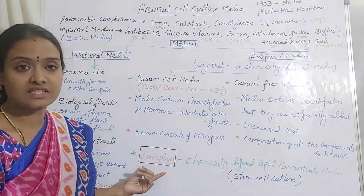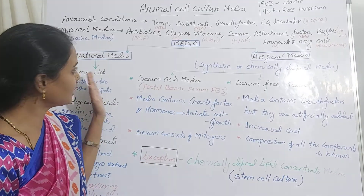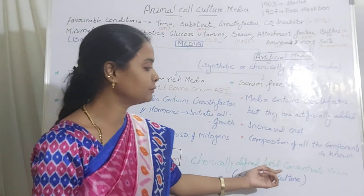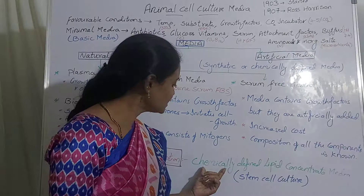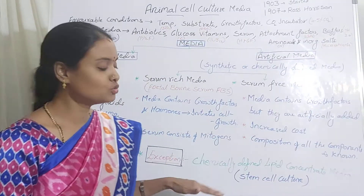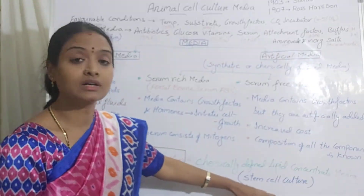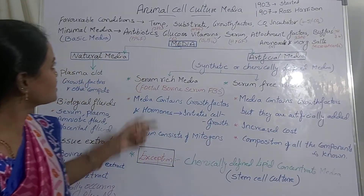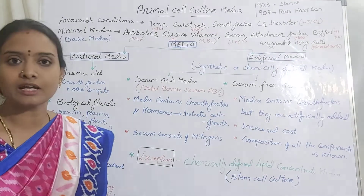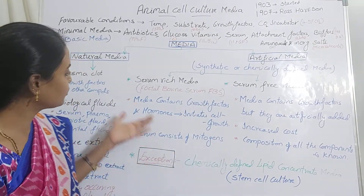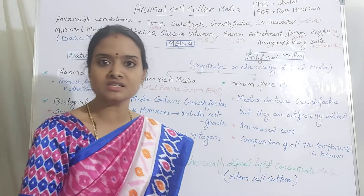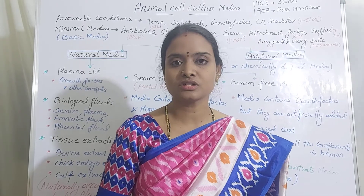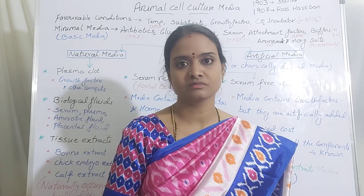There is one exception: apart from these three media types, we also use chemically defined lipid concentrate media. This is used specifically when culturing stem cells. With this, we are done with animal cell culture media. If you have any doubts, put them in the comments. For further lectures, you can subscribe to the channel.